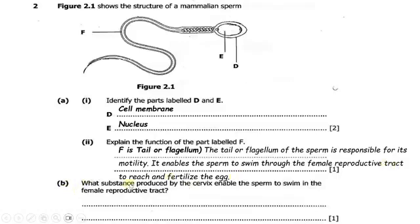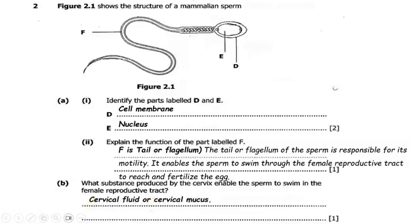Part B asks: what substance produced by the cervix enables the sperm to swim in the female reproductive tract? The substance produced can be called cervical fluid or cervical mucus.